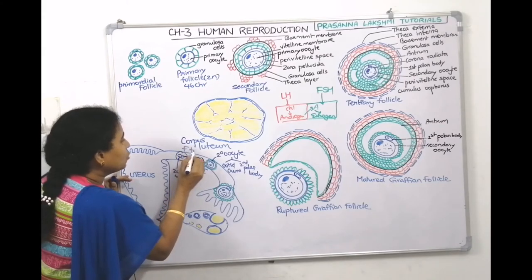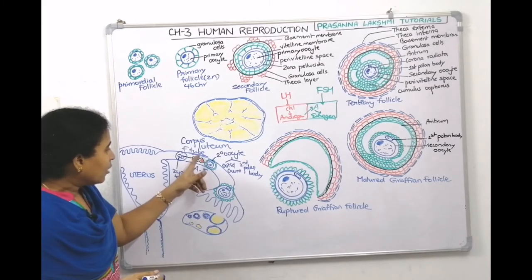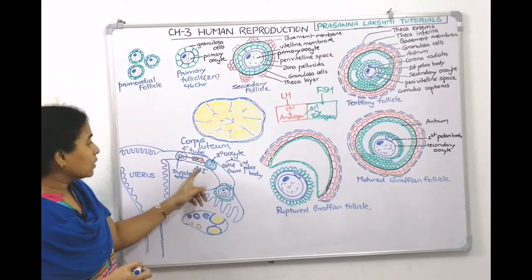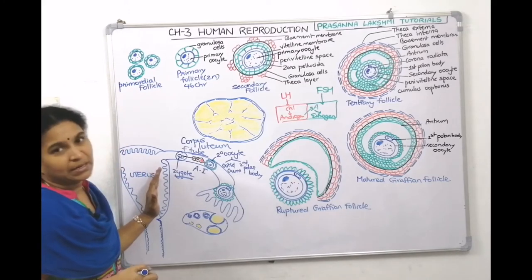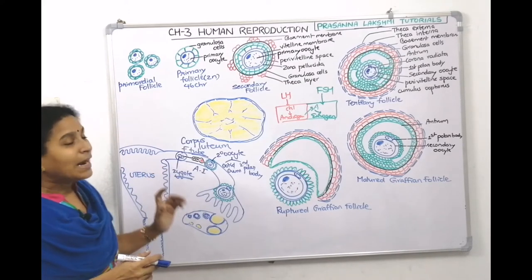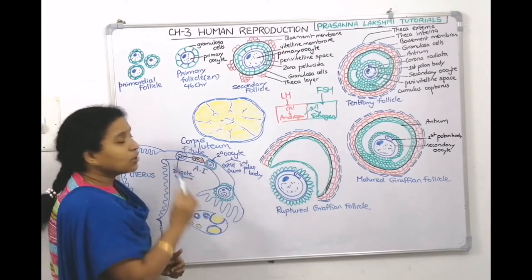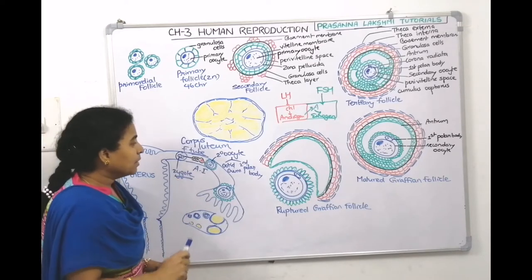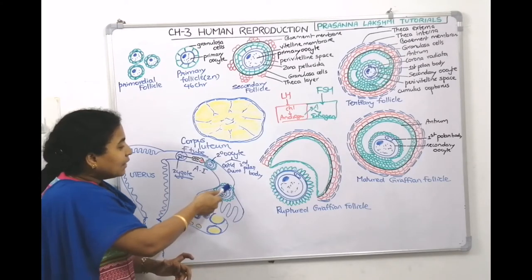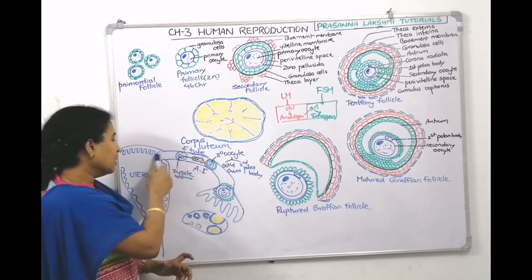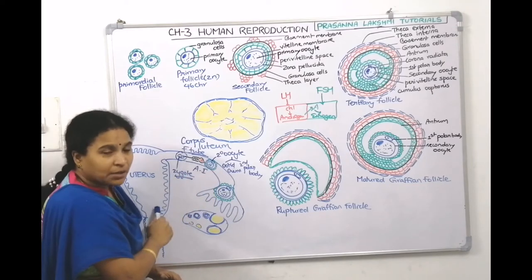Fertilization happens in the fallopian tube, resulting in the formation of a diploid zygote. The zygote starts cleavage in the fallopian tube and then gets implanted in the uterus, confirming pregnancy. If there is no sperm, the secondary oocyte remains arrested at metaphase II, moves directly to the uterus, and starts shedding.